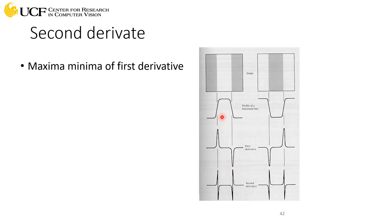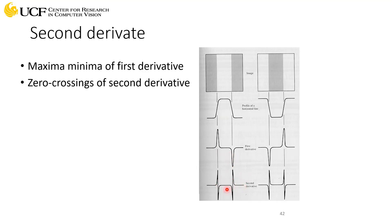In the case of the second derivative, what will happen is you first compute the first order derivative, then you perform the first order derivative of that result, which gives you the second order derivative. It will look something like the bottom plot. Instead of looking at peaks and reverse peaks, you'll have to look for zero crossings.